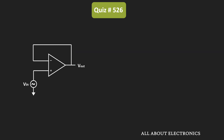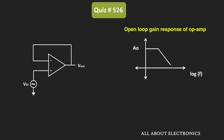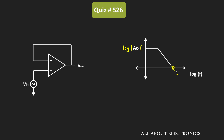For the non-ideal op-amp, if we see the gain versus frequency curve, then initially up to a certain frequency it will provide very high gain. After that, as the frequency increases, the gain will reduce. If the vertical axis is also on a logarithmic scale, then when this line meets the horizontal axis, that point represents unity gain. If we go beyond that frequency, the gain value will be less than 1, or in decibels it will be negative.